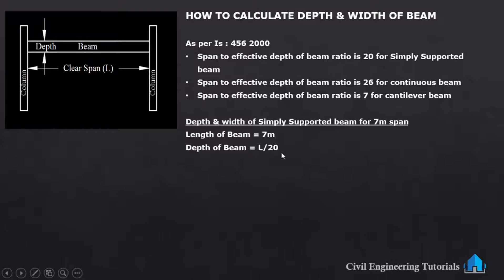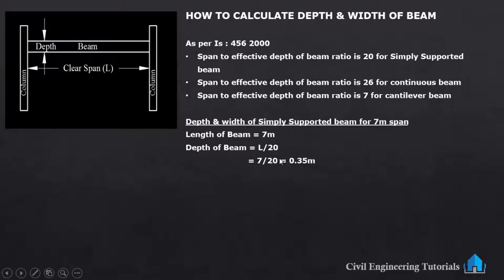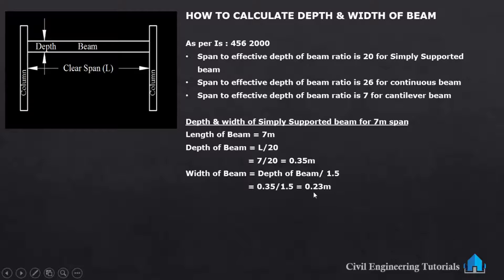Depth of beam is L divided by 20, because the span to effective depth ratio is 20 for simply supported beam. L is 7 meter, so depth of beam is 7 divided by 20, which is 0.35 meter. Width of beam is depth of beam divided by 1.5, so 0.35 divided by 1.5 gives 0.23 meter. So depth of beam is 0.35 meter and width of beam is 0.23 meter.